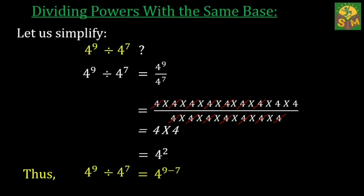So 4 squared is obtained when 4 raised to the power of 9 is divided by 4 raised to the power of 7. So when dividing two powers with the same base, just subtract the exponents.